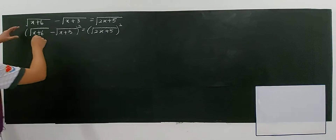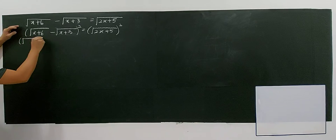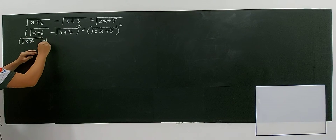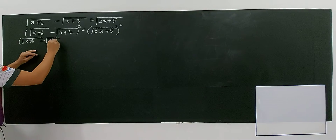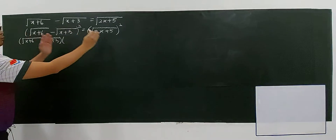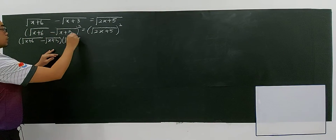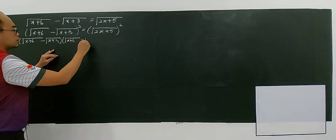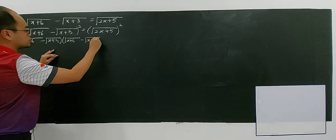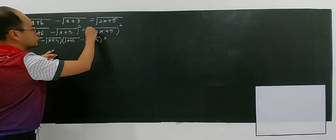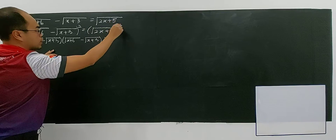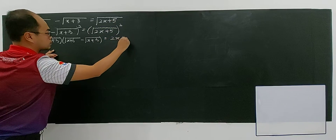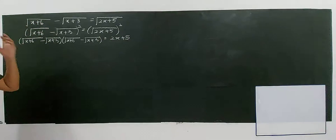Now, since you have squared both sides, you have square root of x plus 6 minus square root of x plus 3, all to the power of 2. You expand: x plus 6, minus the cross terms, and the square root and square cancel — giving you 2x plus 5 on the right hand side.